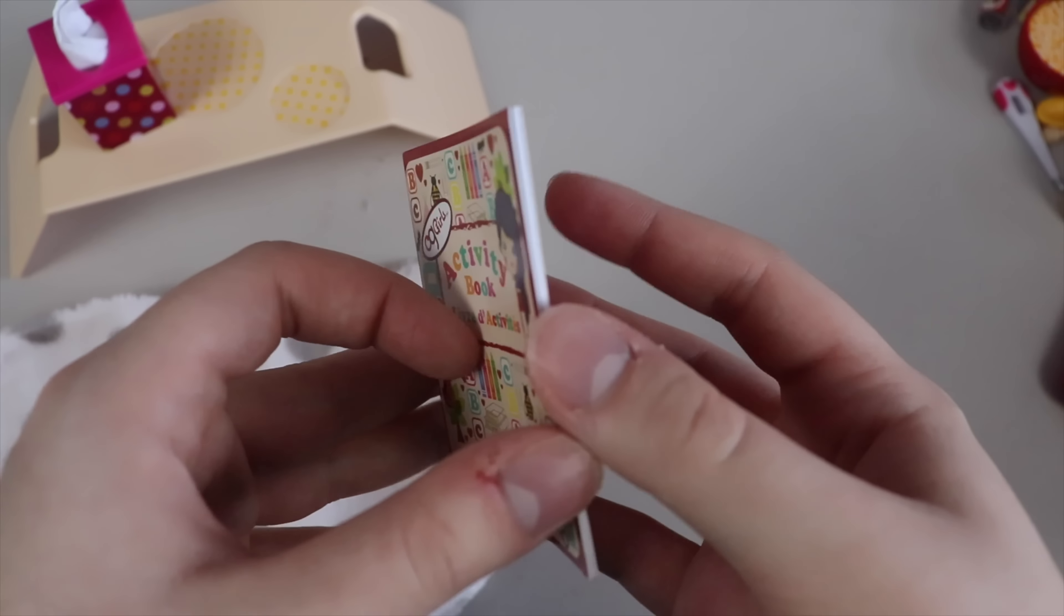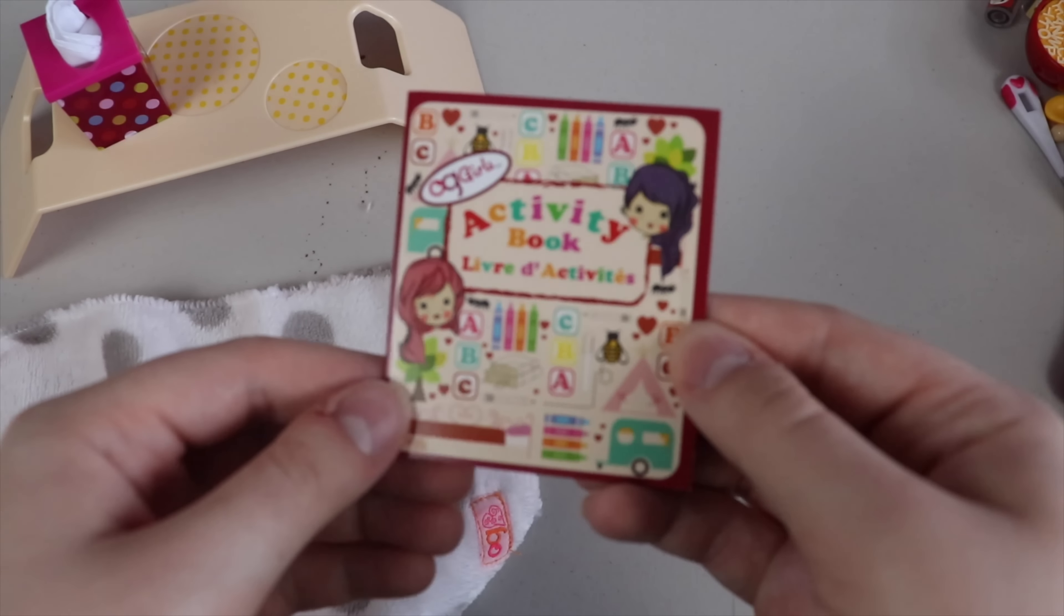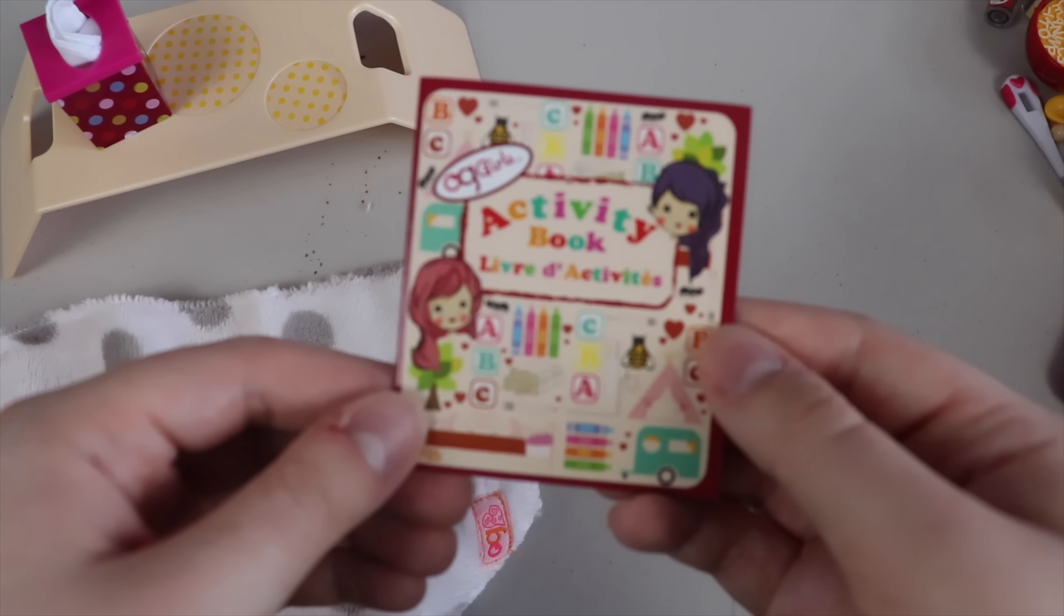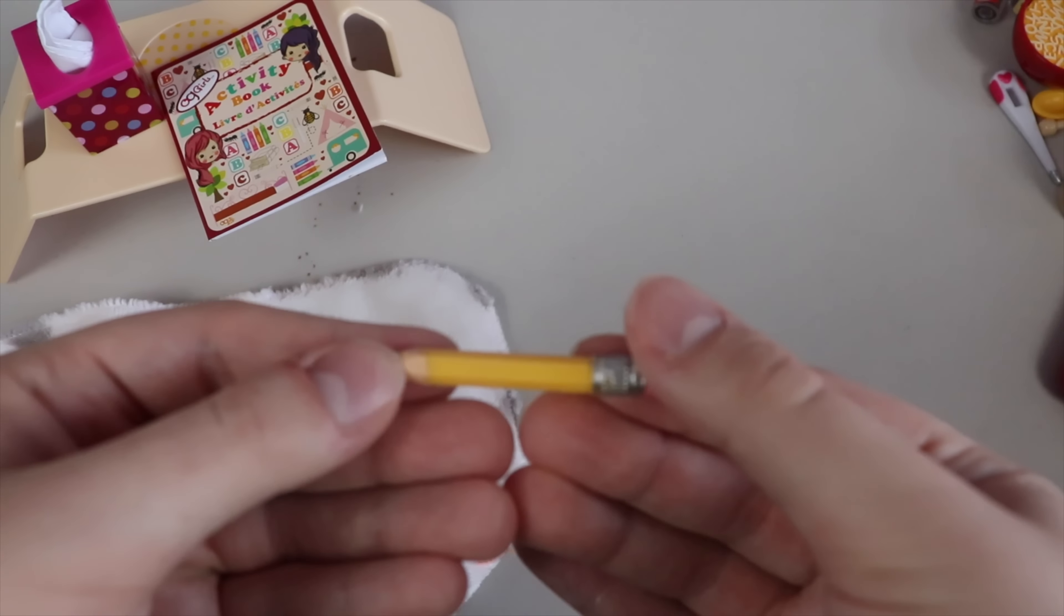The activity book is filled with several blank sheets of paper. So you can definitely fill this book out and have some fun activities for your doll to do when she's sick. The pencil is a basic Our Generation pencil, so it's just made of a light plastic.